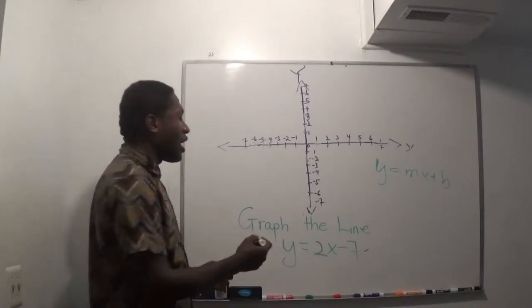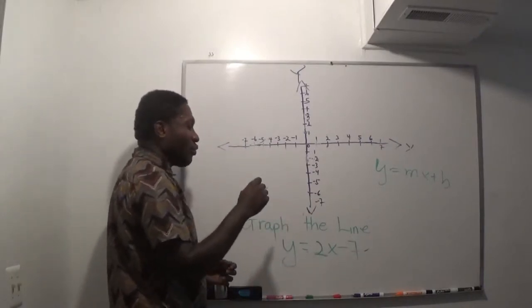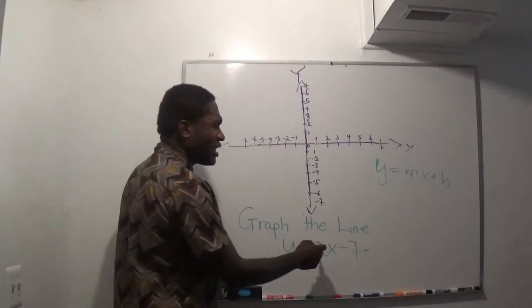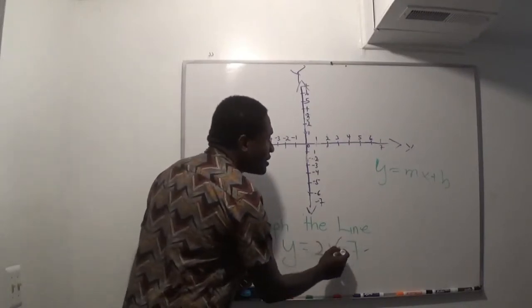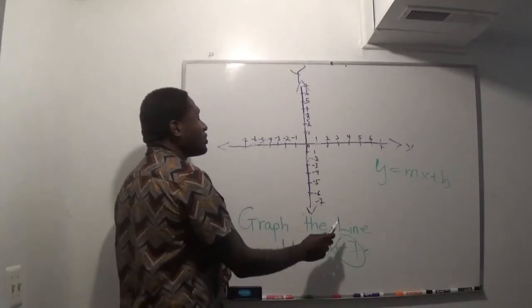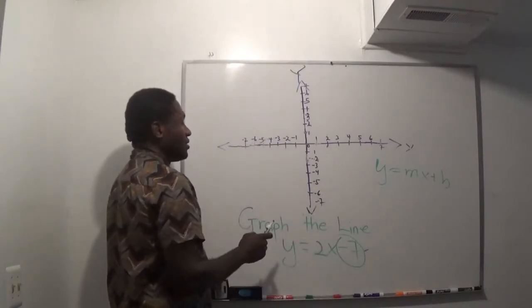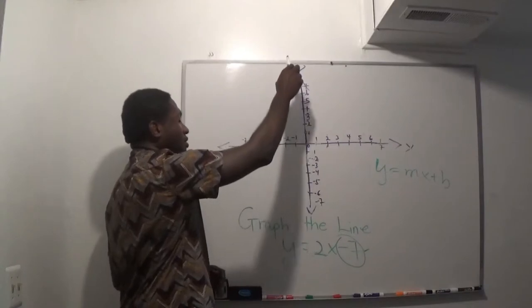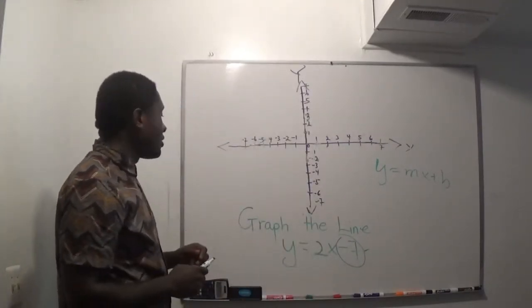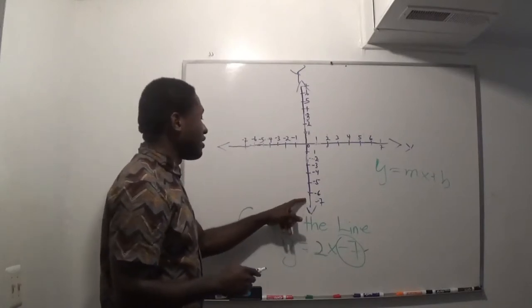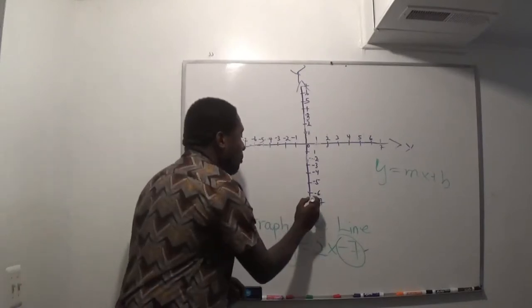When I'm graphing, I always start at my y-intercept, and the y-intercept is always a number without the x. So my y-intercept is negative 7, so that's where I'm gonna start. On the y-axis, where is negative 7? That is negative 7, so I'm gonna put a point right there.